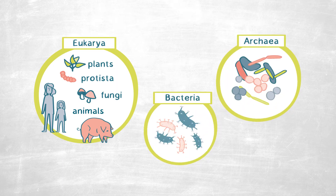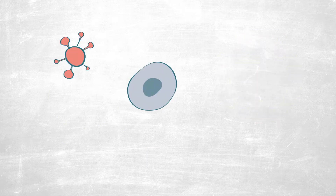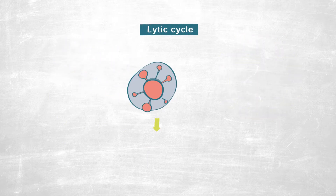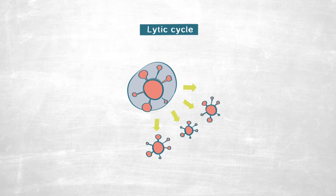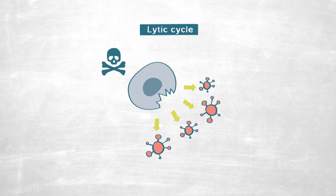Traditionally, viruses have always been seen as a killing machine, which infects the host, reproduces itself, and then lyses the host in the process, which is known as a lytic cycle.